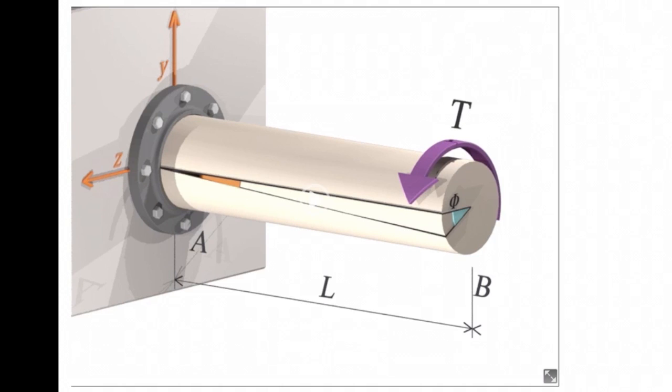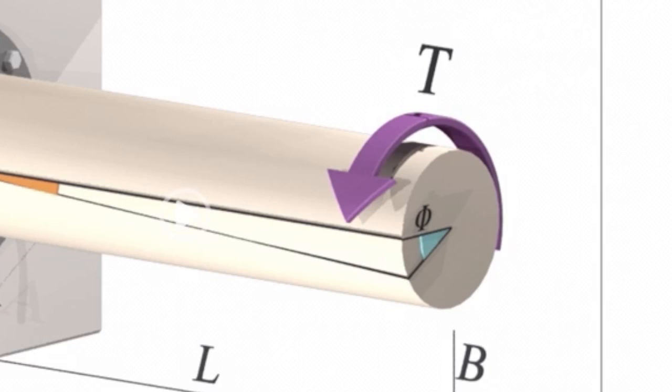What we expect to see is the change in the angle. Look at this blue angle shown here. This is what we call phi, or angle of twist. This is the deformation that happens in torsional elements.